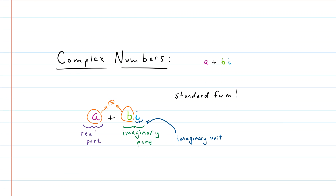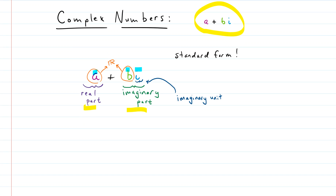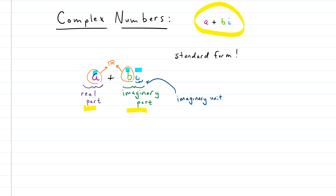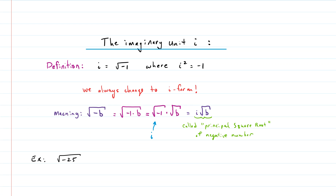Standard form for complex numbers is a plus bi. The a part is the real part and the bi part is the imaginary part, even though a and b themselves are real numbers. i is the imaginary unit, which we'll talk about in a second. Standard form is written with the real number a in front and the imaginary part second.